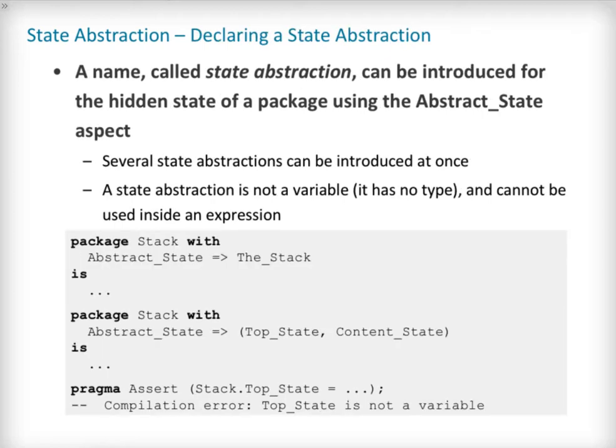As the hidden state influences the program's behavior, SPARK allows it to be declared. For this, a named state abstraction can be introduced using the abstract_state aspect. This is not mandatory even for a package which has hidden state. Several state abstractions can also be introduced for the hidden state of a single package, or for a package with no hidden state at all. Note, however, that SPARK does not allow aliasing — different state abstractions must always refer to disjoint sets of concrete variables. Note also that a state abstraction is not a variable; it does not have a type and cannot be used inside expressions, be they in bodies or in contracts.